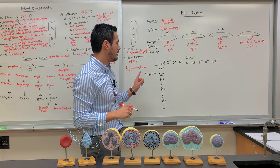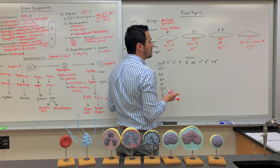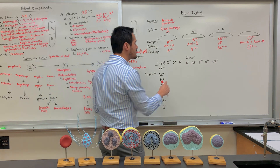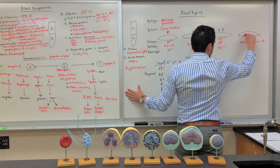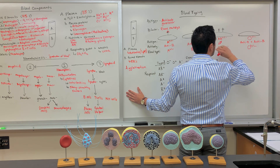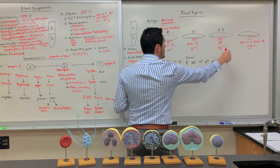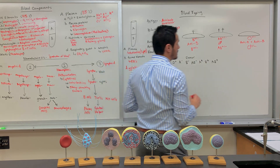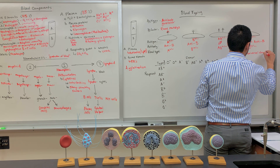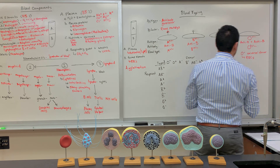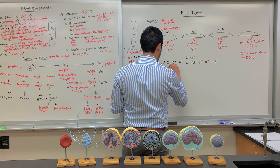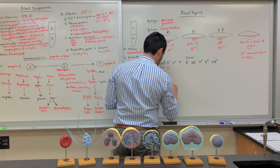There are universal donors and universal recipients. Someone that is O negative — meaning no A antigen, no B antigen, and no RH factor — is the universal donor of red blood cells, meaning they can give red blood cells to all of the blood types, from AB positive all the way down.